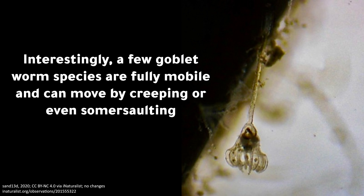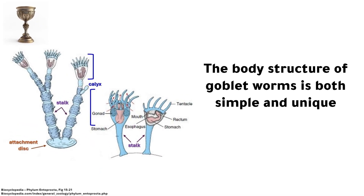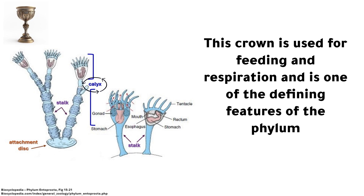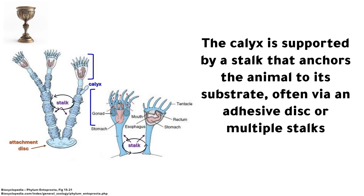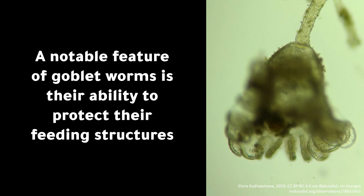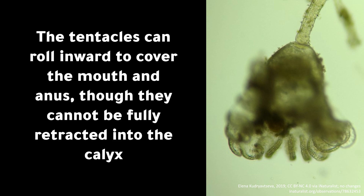Interestingly, a few goblet worm species are fully mobile and can move by creeping or even somersaulting. The body structure of goblet worms is both simple and unique: their cup-shaped body, known as the calyx, is topped with a crown of ciliated tentacles used for feeding and respiration. The calyx is supported by a stalk that anchors the animal to its substrate, often via an adhesive disc or multiple stalks — an appearance that inspired the common name 'goblet worms.' A notable feature is their ability to protect their feeding structures; the tentacles can roll inward to cover the mouth and anus, though they cannot be fully retracted into the calyx.